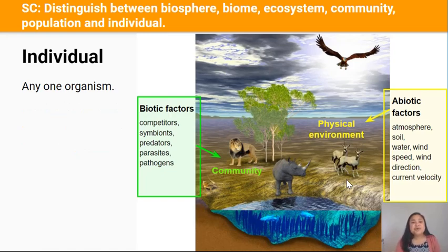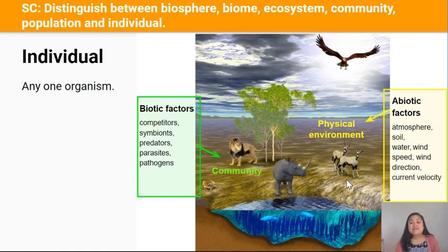This example shows an African savannah ecosystem made up of non-living abiotic factors like sunlight, wind, air temperature, and humidity. In the soil there are also factors like nutrient availability, soil moisture, and pH. In the water there are factors like dissolved nutrients, dissolved oxygen, pH, and temperature. These are all abiotic factors because they're not living — they're part of the non-living environment.